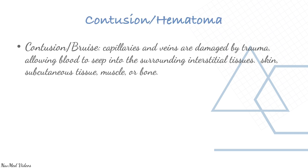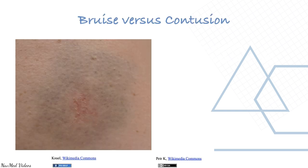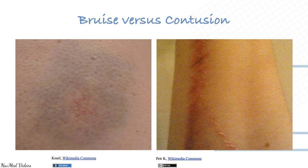A contusion or bruise occurs when capillaries and veins are damaged by trauma, allowing blood to seep into surrounding interstitial tissues — skin, subcutaneous tissue, muscle, or bone. Cerebral, myocardial, or pulmonary contusions can occur. A hematoma is a localized collection or pocket of blood. Note the important distinction: a bruise is superficial, whereas a contusion involves deeper tissue.